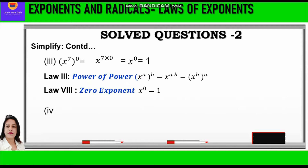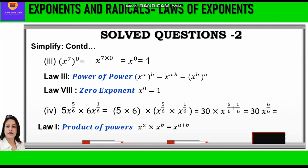Now question 6: 5 into x raised to power 5 by 6, into 6 into x raised to power 1 by 6. We group the coefficients 5 and 6 together, and the variable x terms together. So we write 5 into 6 into x raised to power 5 by 6 into x raised to power 1 by 6. Applying law 1, product of powers, we add the powers: 30 into x raised to power 5 by 6 plus 1 by 6, equal to 30 into x raised to power 6 by 6, equal to 30x.